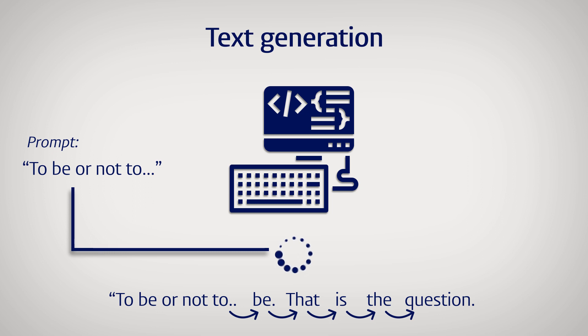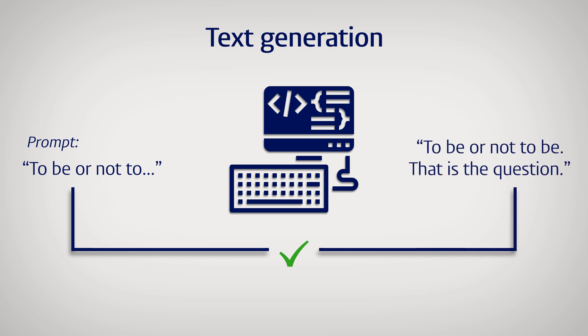So while the LLM is technically predicting words, the result is that it writes a new text. To make this work well, you've got to fine-tune the process a little bit. For instance, you've got to tell the LLM not to take the most obvious word all the time, because that would lead to really boring texts. But this is basically how it works.